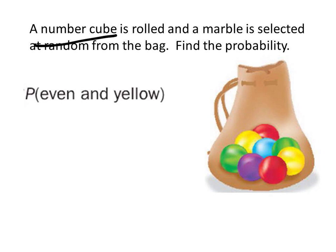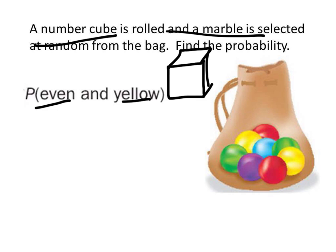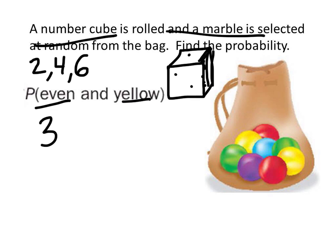In this example, a number cube is rolled and then we select a marble. We want to know the chances of rolling an even number and then choosing a yellow marble. On the number cube, the even numbers are two, four, and six — that's three possible even outcomes. Looking in the bag, there are two yellow marbles. So three times two gives us six desired outcomes.